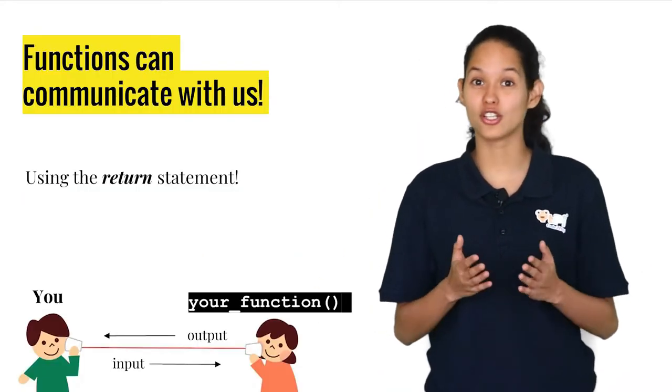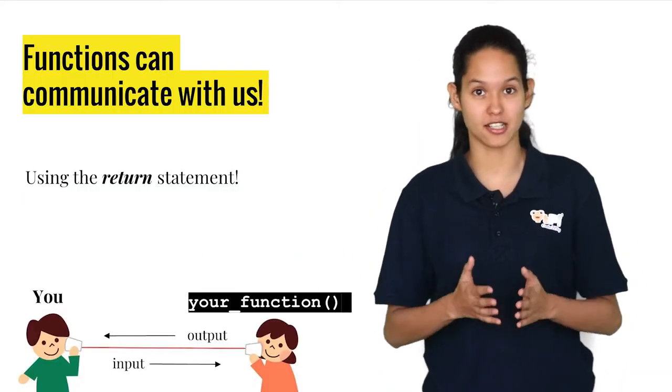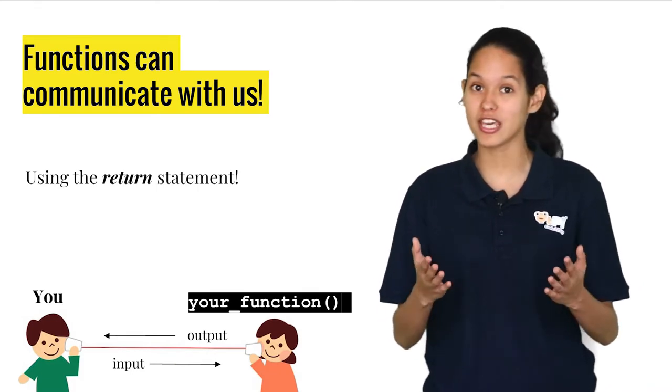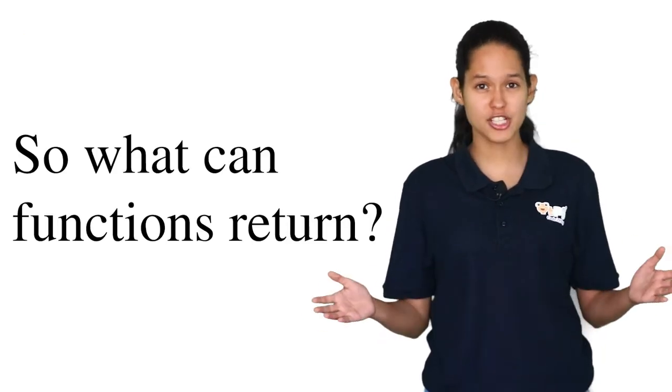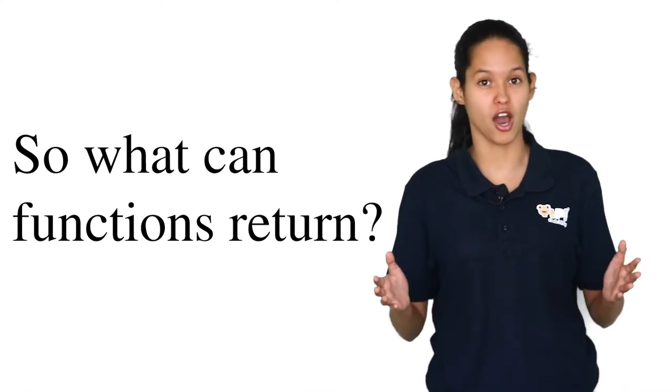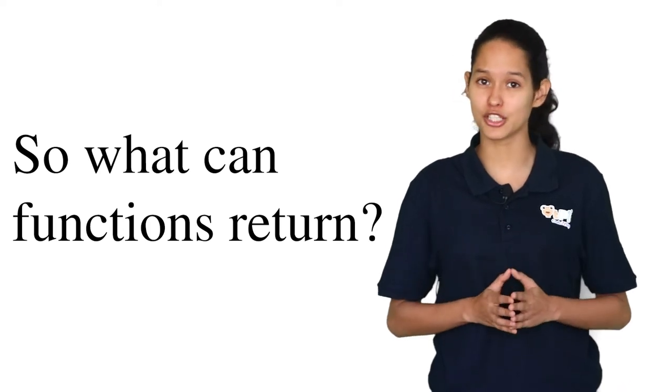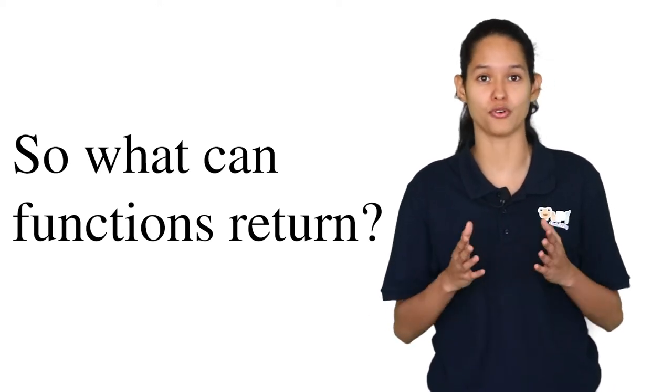You all know that you can call a function to perform a particular task in Python, but did you know that the function can communicate back to you? Functions can return information or output to a user. This may be a particular value, or it could tell the user how the execution of the program was performed. That's what the return keyword allows us to do. Let's take a look at the different values that a function can return.